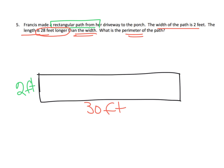Now our job is to find the perimeter. If this length is 30 feet, then the opposite length is also 30 feet. And if this width is 2 feet, then the opposite width is also 2 feet. We now have enough information to find the perimeter of the path.